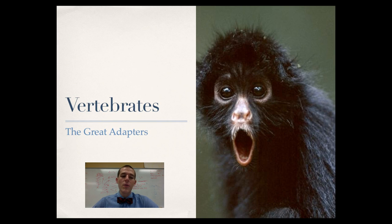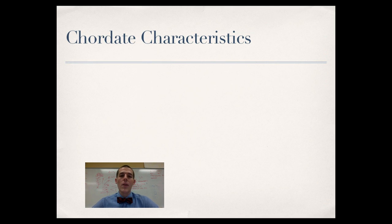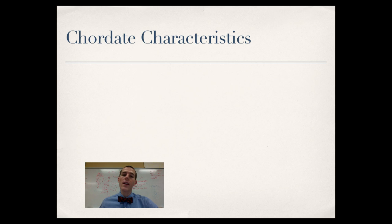First thing — the vertebrates. We're calling them the great adapters because, in terms of the animals that dominate the land, it is the vertebrates. We're going to track their development from the least complex lancelet all the way up to humans. As we go through today's video, I'll give you a slide with characteristics of a group and then a couple of representative examples. You can assume that characteristics on one slide are found in all animals mentioned after that unless I indicate otherwise.